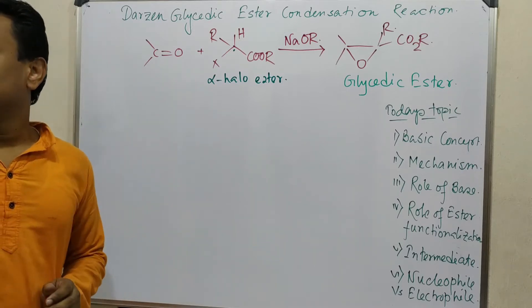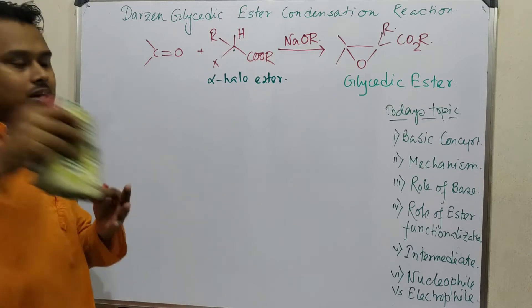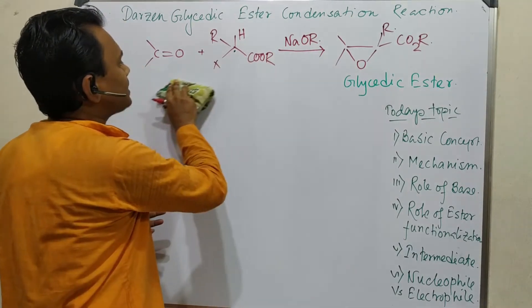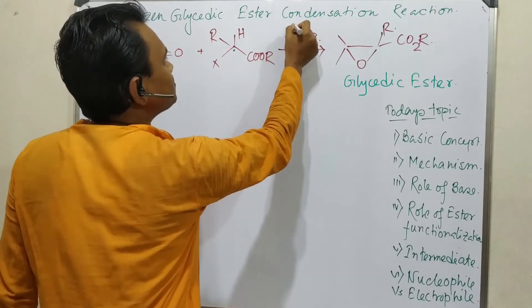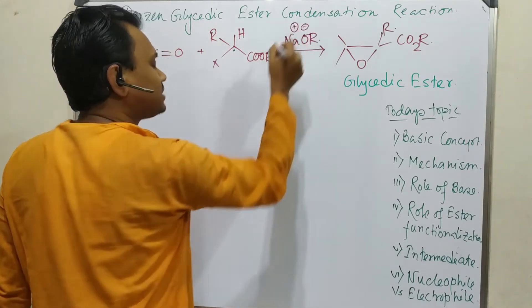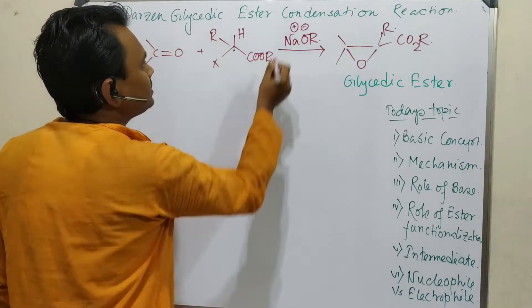So what is actually happening in this case? Firstly, this alpha-halo ester has an acidic hydrogen - you can see this hydrogen - so in presence of base, this sodium alkoxide, we will take sodium alkoxide, it abstracts.